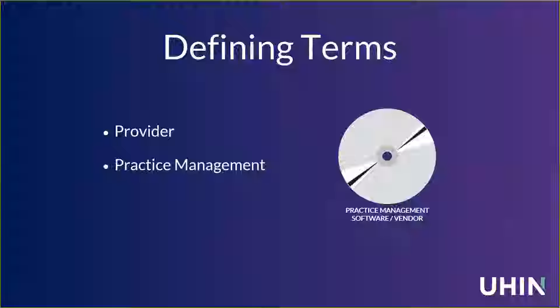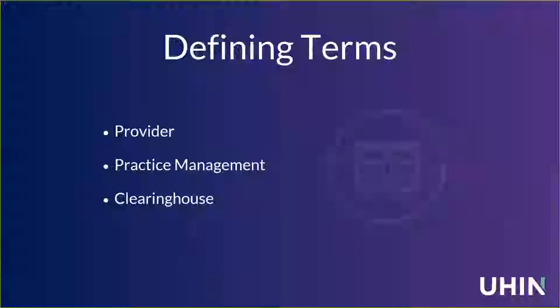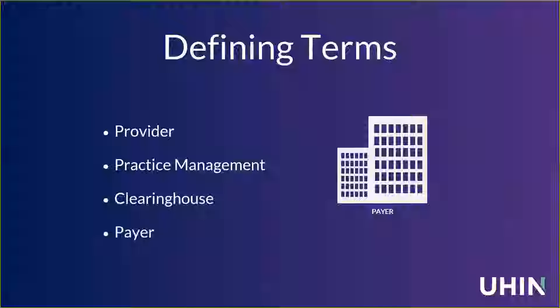After practice management software has done its work, things typically go to a clearinghouse. Clearinghouses are like a very fancy post office — UHIN is actually a clearinghouse. We're all about getting information from point A to point B, with validation, scrubbing, and routing in the middle. And then, of course, we're delivering it to somebody — the payer. The payer is the insurance company, and for today's purposes, the payer is the one who holds the insurance information and creates and sends the 271 response with the coverage and benefits information.